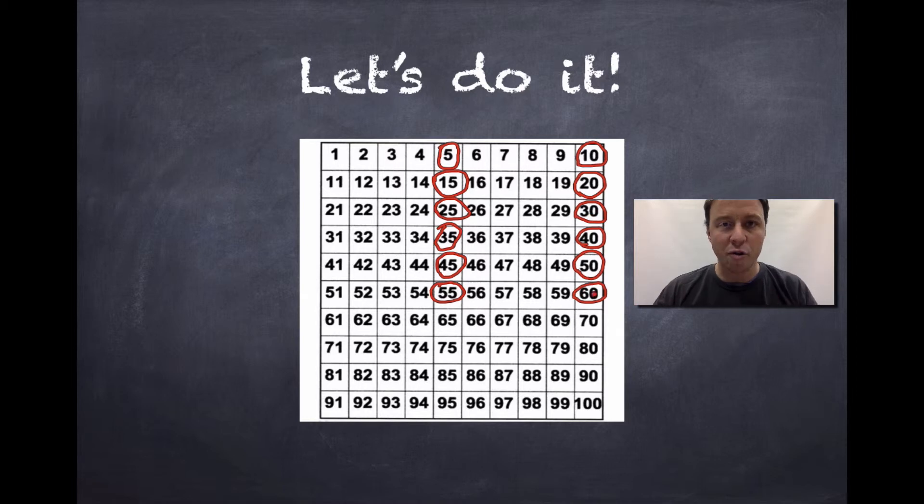We can keep going. We can go all the way to a hundred. We can go all the way to a thousand if we wanted to, right? But this should be enough for us to see the pattern. Look, when you're skip counting by fives, all your numbers end in either five or zero.